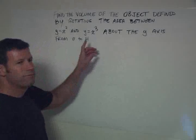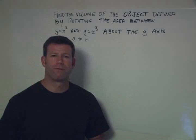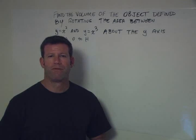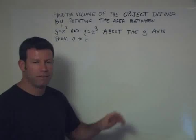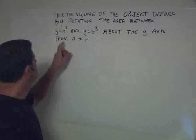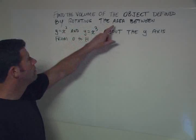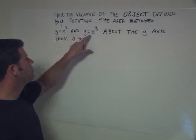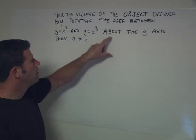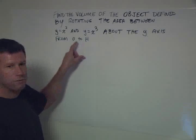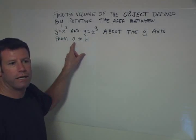The problem revolves around volume of revolution involving the washer method. Find the volume of the object defined by rotating the area between y equals x squared and y equals x cubed about the y axis from y equals 0 to y equals h.